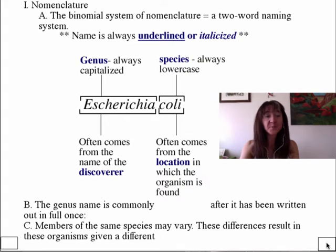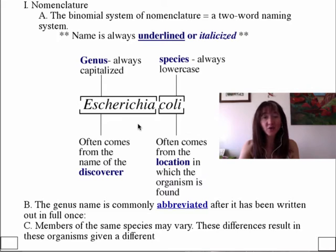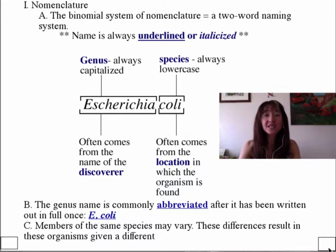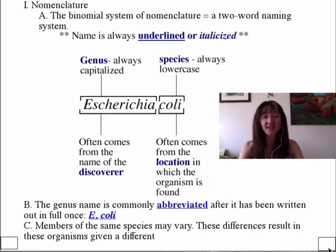The genus name is commonly abbreviated—you've probably never heard E. coli called Escherichia coli; it almost always goes by its abbreviated name. This abbreviation is appropriate and accurate. However, it should never be used the first time you refer to a bacterium. So if you're writing a paper and you mention Escherichia coli for the first time, you should write out the genus name first; then subsequent times you can say E. coli, and that's appropriate.